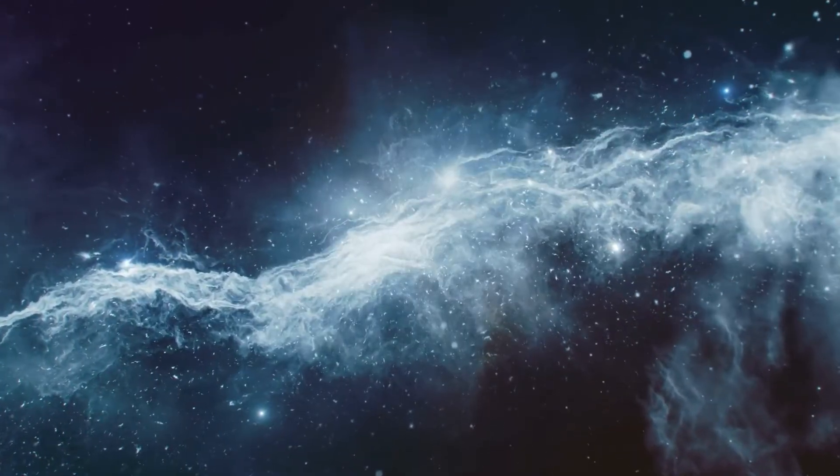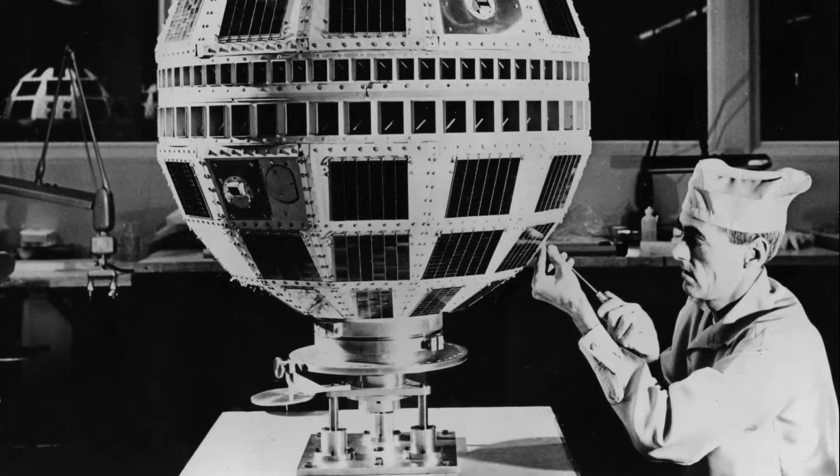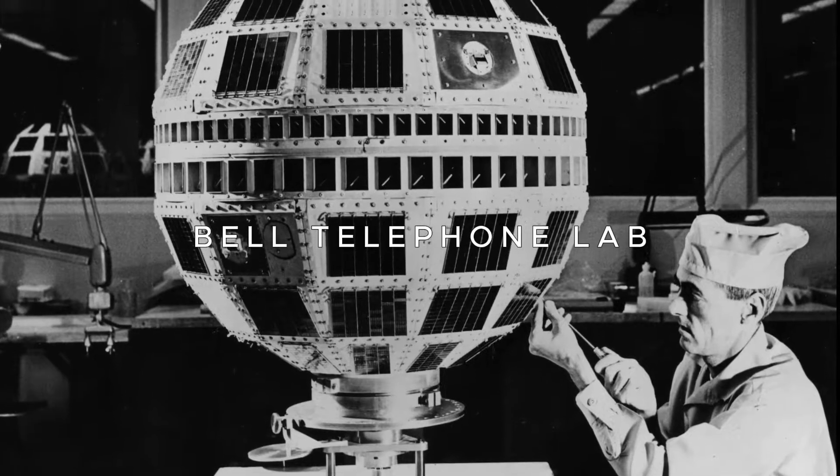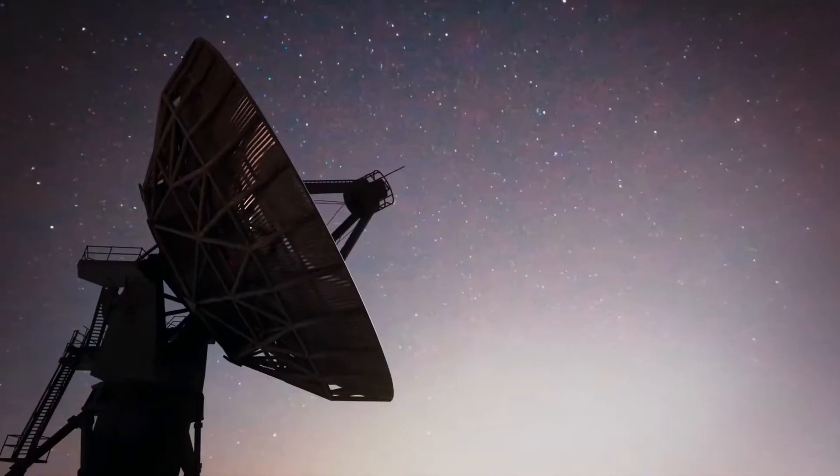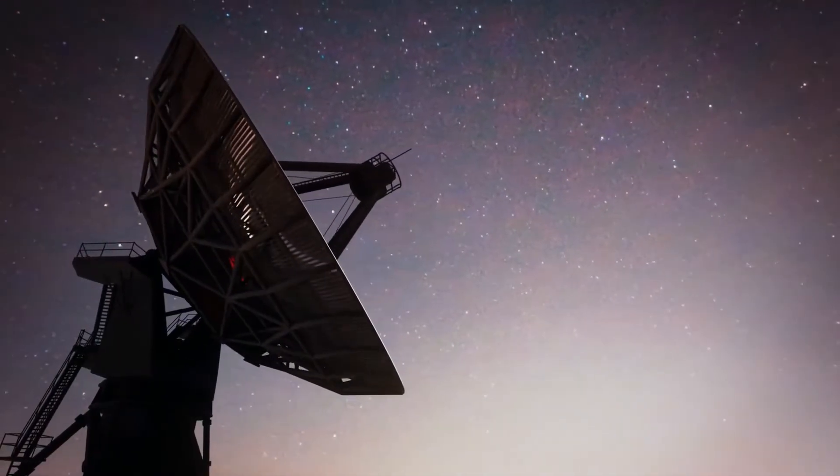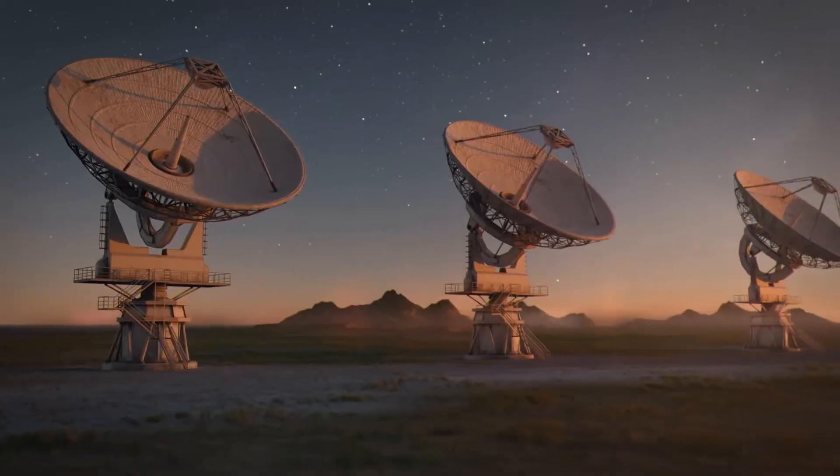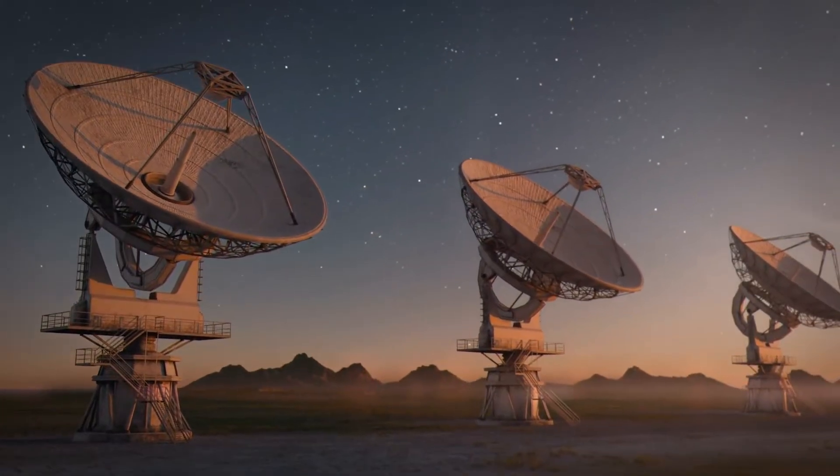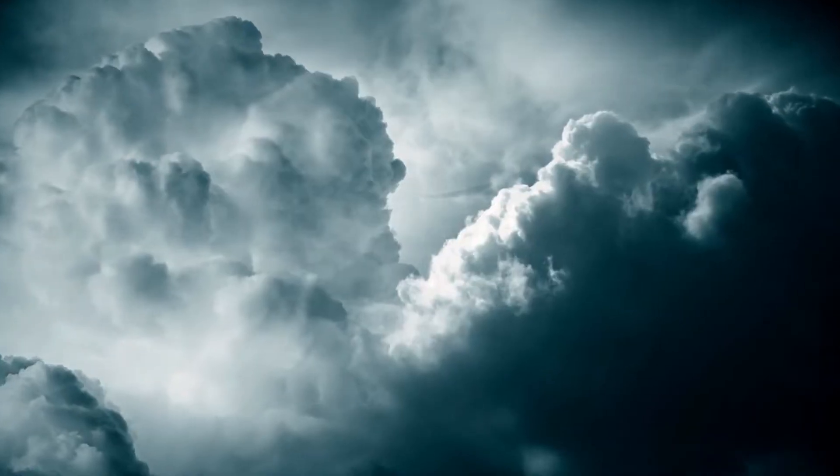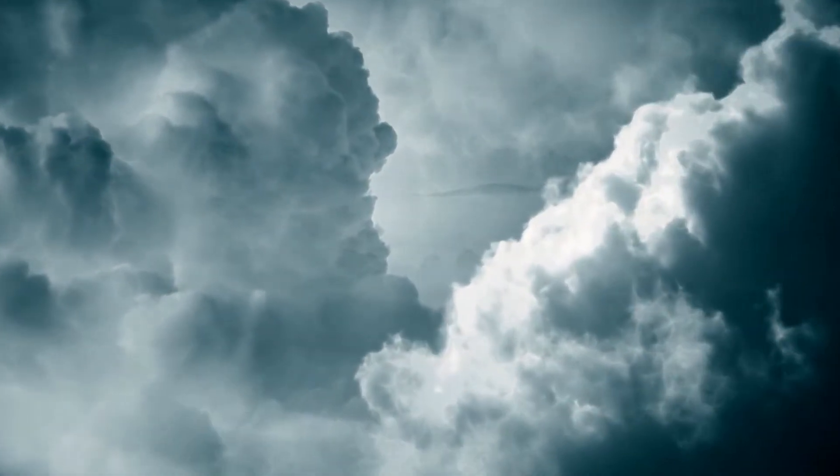The first to take note was physicist Carl Jansky in the 1930s. Tasked by his employer, Bell Telephone Labs, to investigate sources of static interference, Jansky stumbled upon what would become a groundbreaking discovery in radio astronomy. Using this cumbersome radio receiver, Jansky meticulously scanned the airwaves. He identified most of the static as originating from nearby and distant thunderstorms.